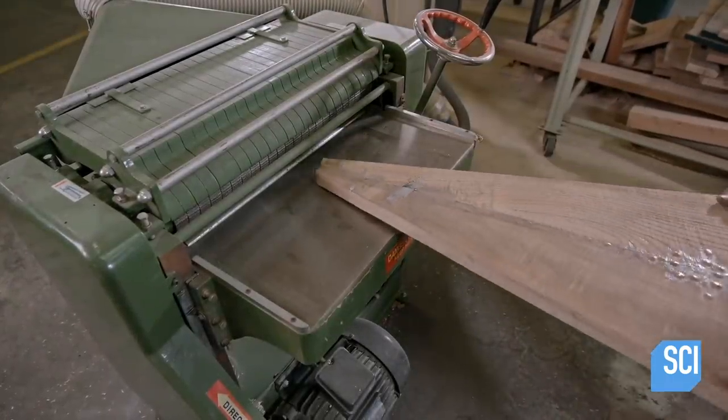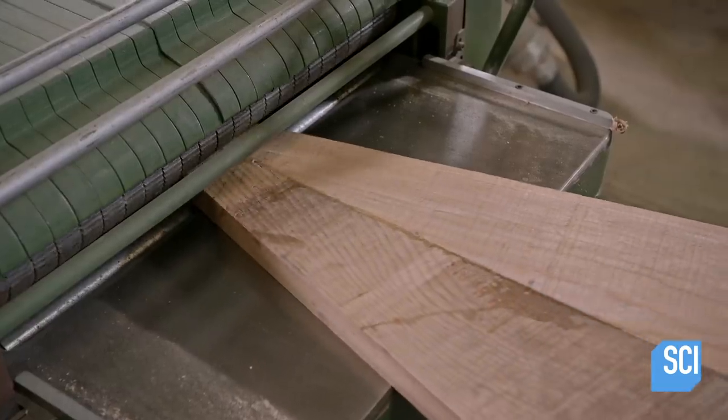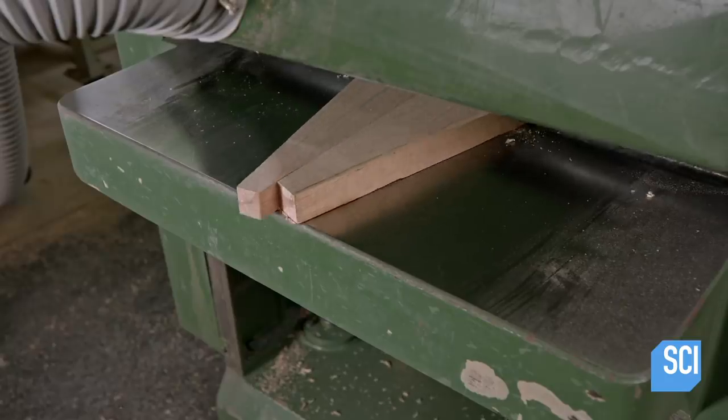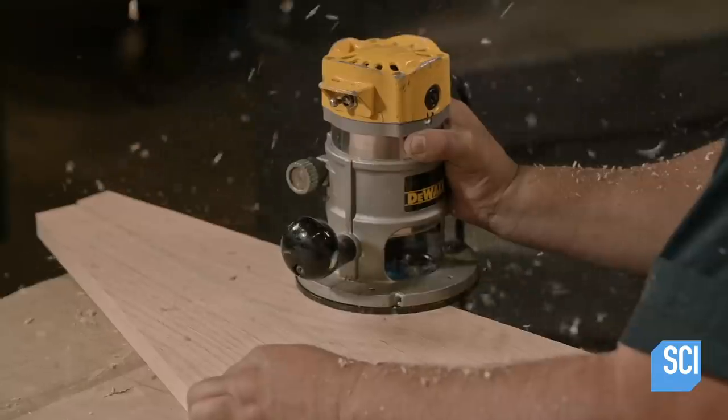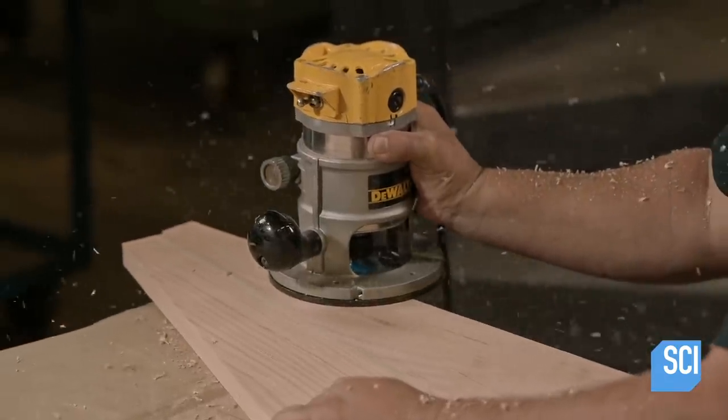Once the glue has cured, a planer shaves the tread perfectly flat and to the desired thickness. After refining the profile, a worker rounds the edge of the stair tread using a router.